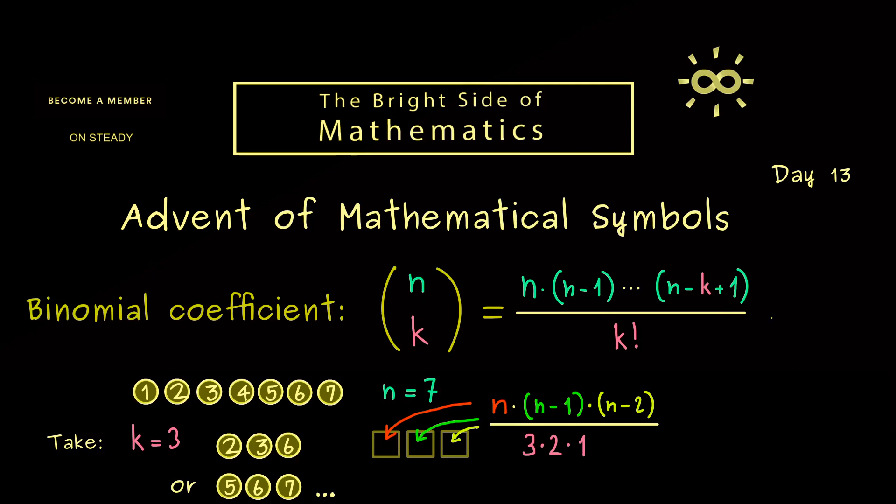And for the end I can tell you there is a shorter definition for this. Namely we have n factorial divided by k factorial as before and also n-k factorial. There you should see these 2 parts here just cancel to get you this.